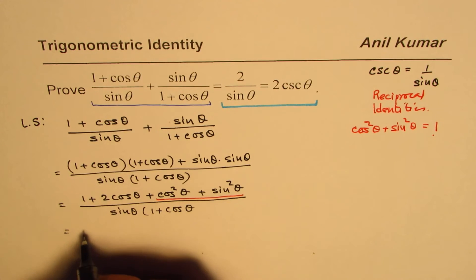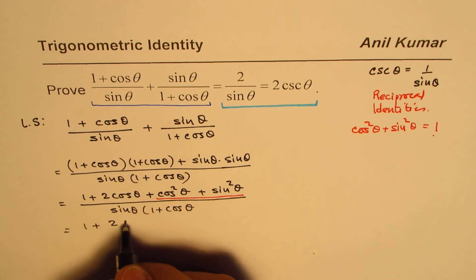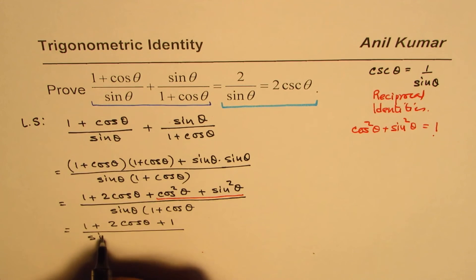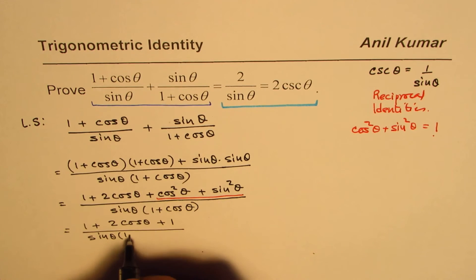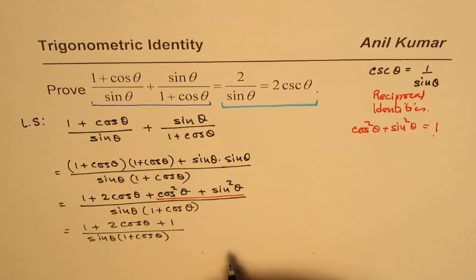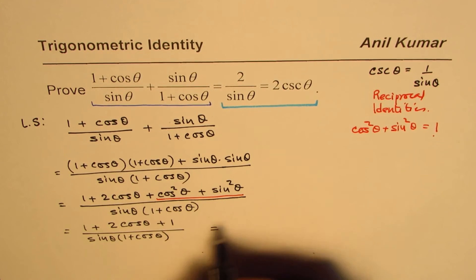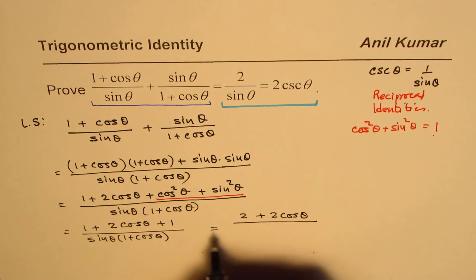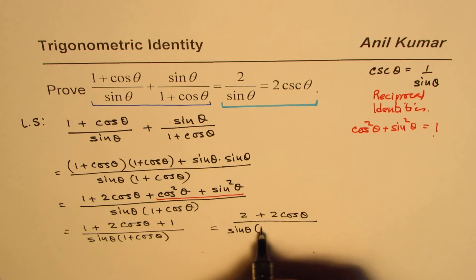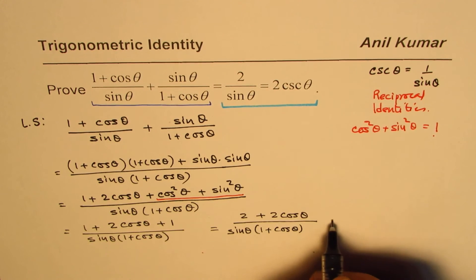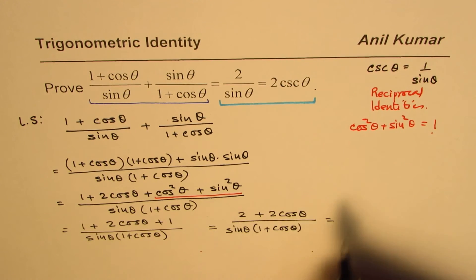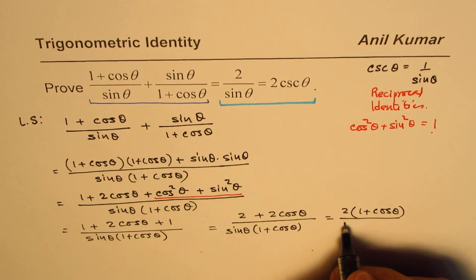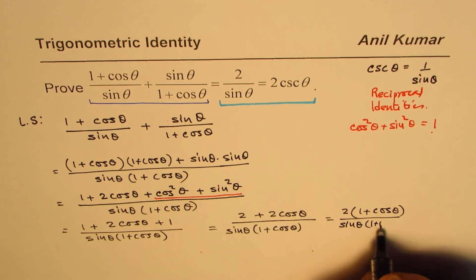We replace cos²θ + sin²θ with 1, giving us 1 + 2cosθ + 1 divided by sinθ(1 + cosθ). Since 1 + 1 = 2, we get 2 + 2cosθ divided by sinθ(1 + cosθ). We can factor 2 from the numerator to get 2(1 + cosθ) over sinθ(1 + cosθ).